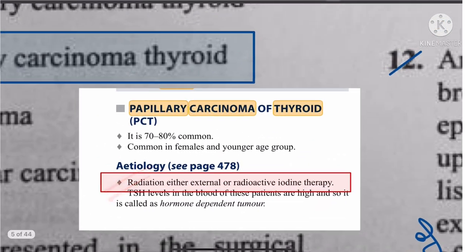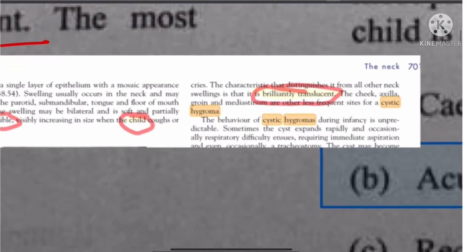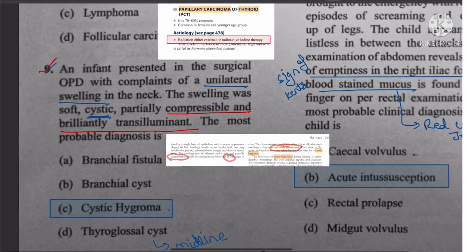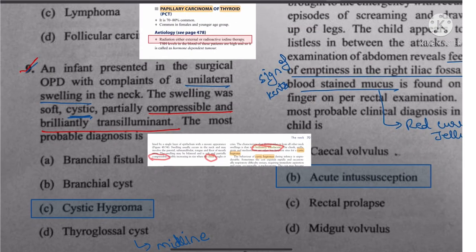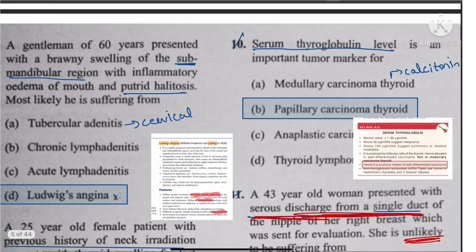Question 9: Unilateral swelling in the neck, cystic, compressible, and brilliantly transilluminant — covering all the keywords: compressible, cystic, and brilliantly transilluminant. The answer is cystic hygroma.